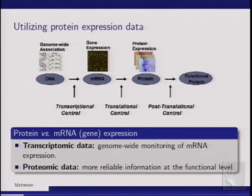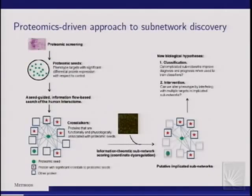Transcriptomic data only provides a proxy to dysregulation at the functional level. Although proteomic data has relatively lower coverage, the question is whether we can use it to make inferences beyond the scale of what the proteomic data tells us. By proteomic data here I mean protein expression data. Our approach uses proteomic screening to identify proteins that are dysregulated in tumor samples at the post-translational level — we call these proteomic seeds.